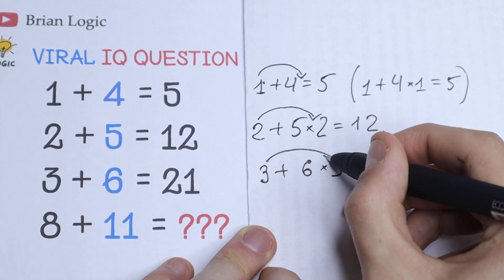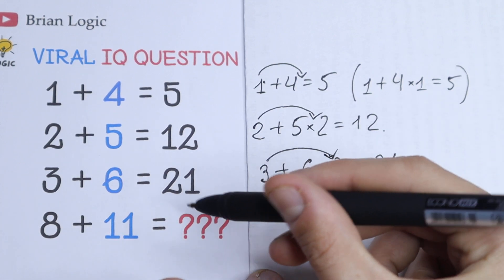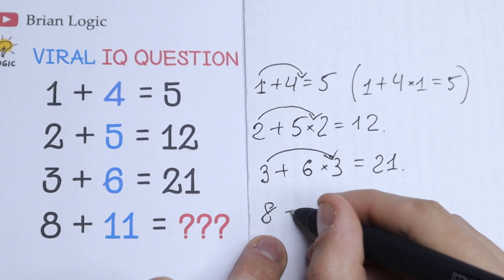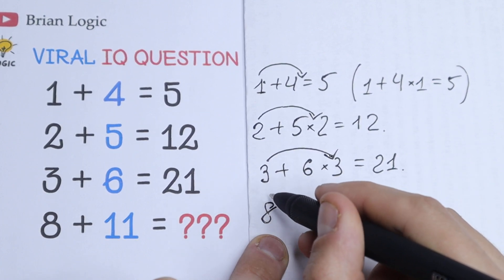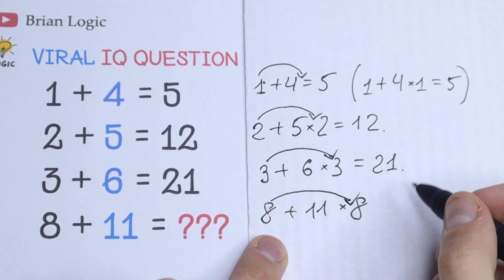We just multiply this first number by the second number and we need to add the first number. So let's use the same logic right here. What we will have? We will have 8 plus 11 times this 8 once more. We need to bring this 8 once more right here because this logic works.